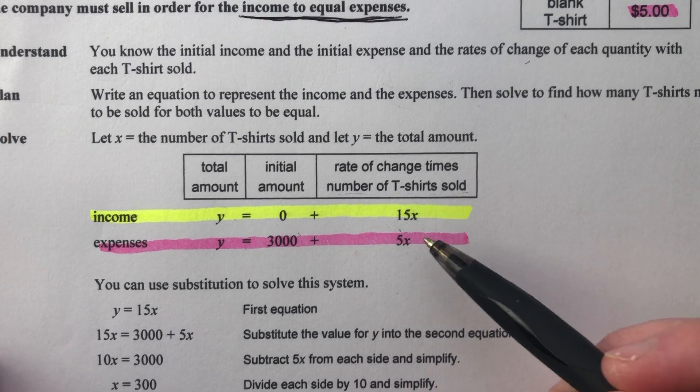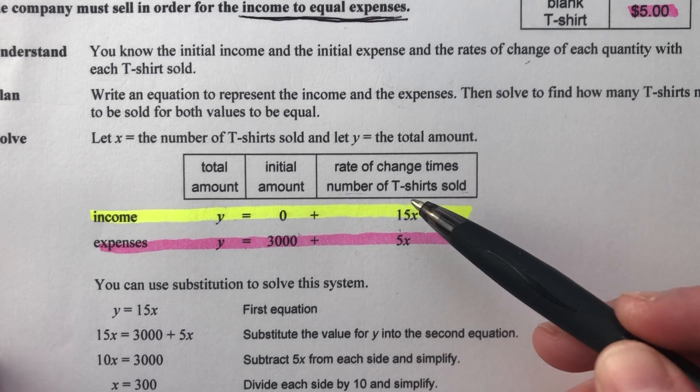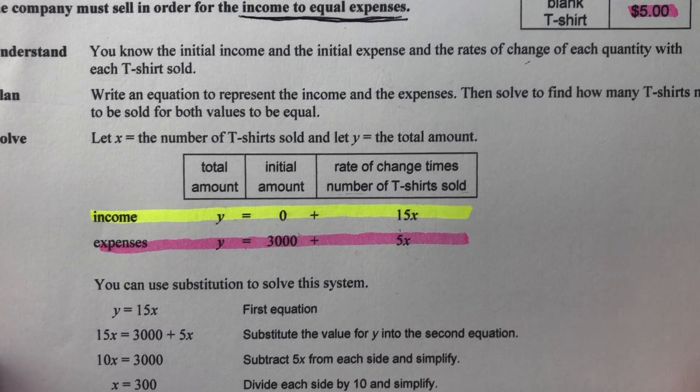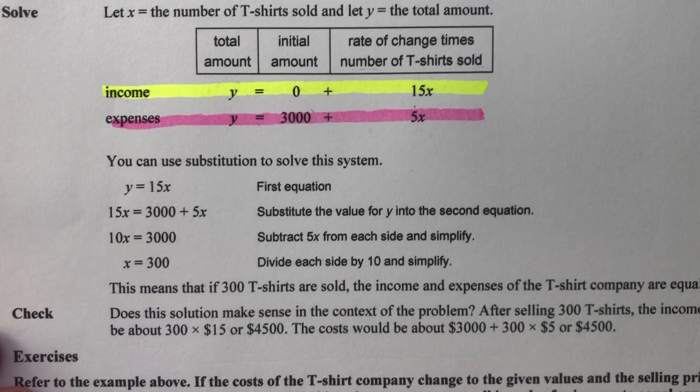So quick math here. If you spend $5 on a shirt and then you sell a shirt for $15, you just made $10 per shirt. That's what your profit is. But we don't have to answer that question.